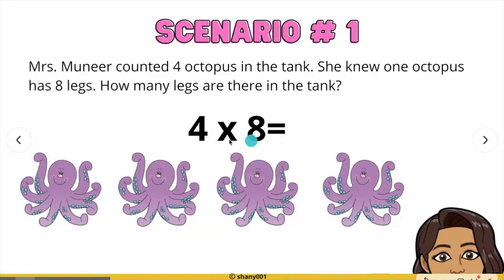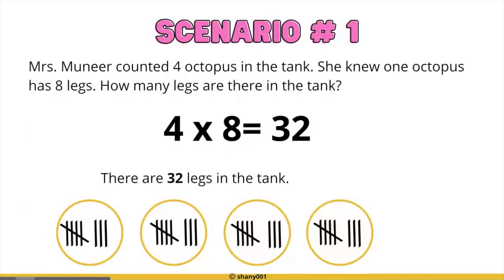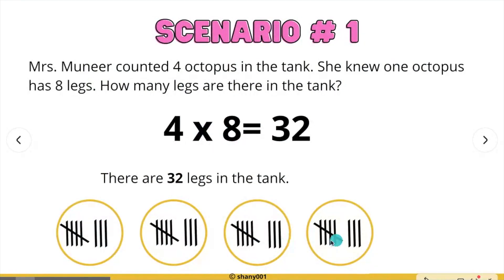You may also write the equation four times eight equals. You may also go ahead and put these in groups. We have four circles and we're going to be using tally marks, putting eight tallies in each circle. So our answer is there are 32 legs in the tank.